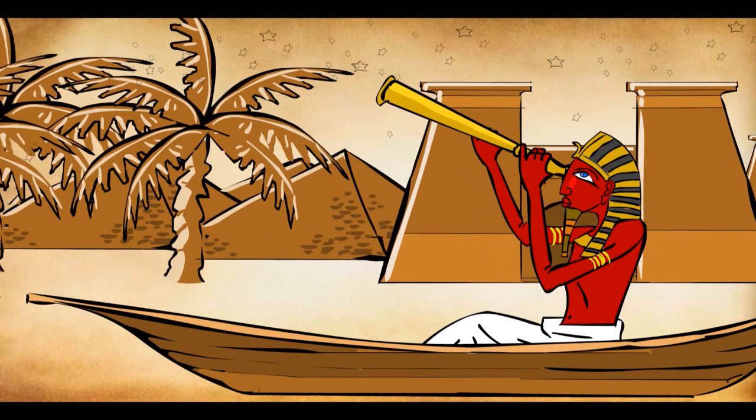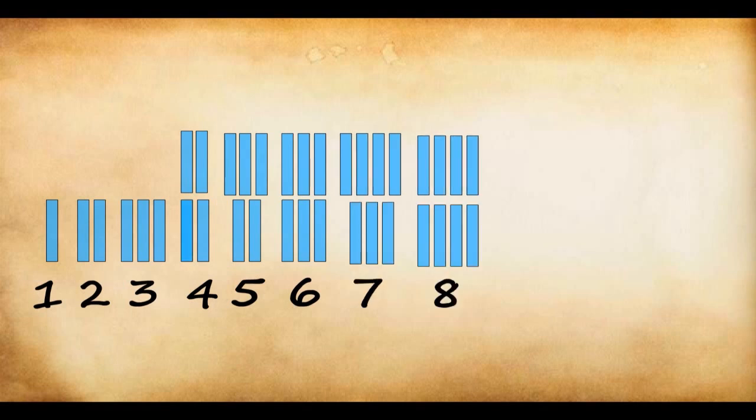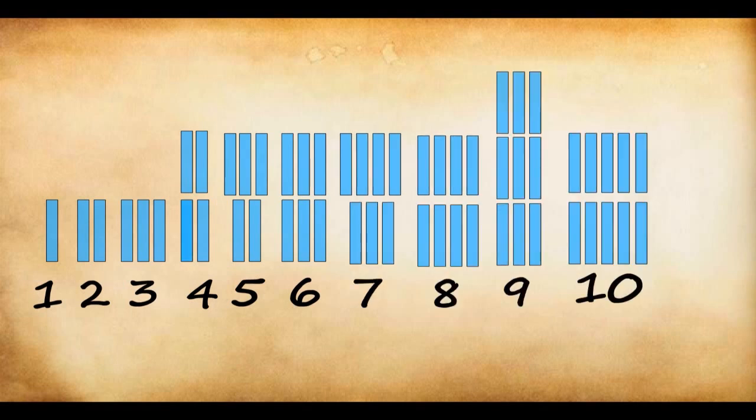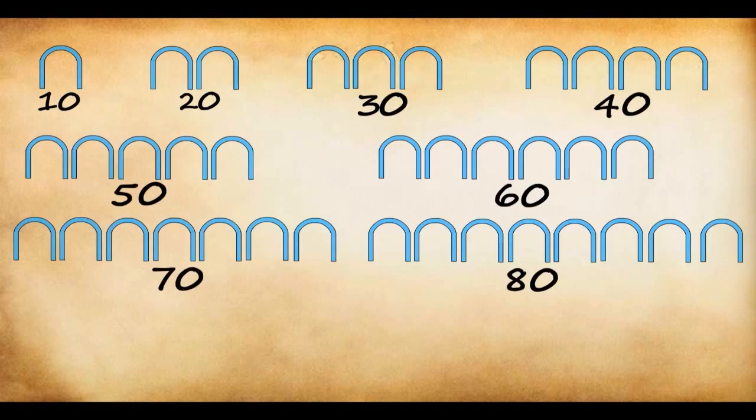They used objects from everyday life as symbols. A rod stood for 1. They used 2 rods to show 2. Similarly, 3 to show the number 3, and so on till 9. They realized that using 10 rods for 10 was getting too long. So instead they used a horseshoe to represent 10. So a horseshoe represented 10. They would use 2 such horseshoe to represent 20, and so on. So 9 horseshoe would represent the number 90.